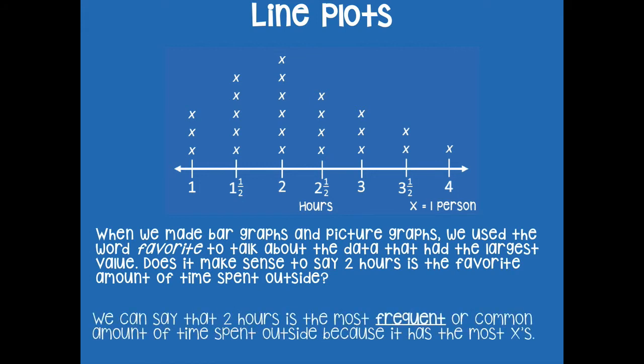Not too much. It makes more sense that we can say that two hours is the most frequent or more common amount of time spent outside because it has the most X's. Sometimes when we think about when we're going outside, it's more when we have time to go outside, not necessarily our favorite time to go outside. So with line plots, it's typically things that are more frequent that happen or more common.